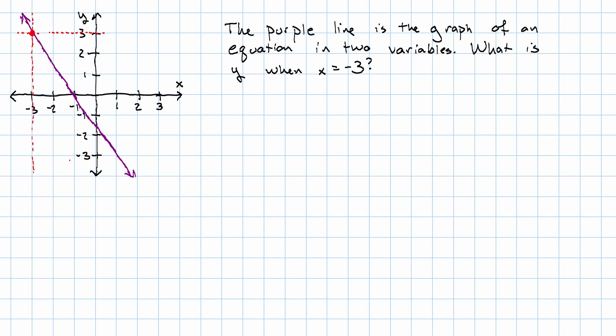And we see that its y coordinate is positive 3. So because the point negative 3, positive 3 is on the graph, that ordered pair is a solution of the equation. What does that mean? When x is negative 3, y is positive 3.